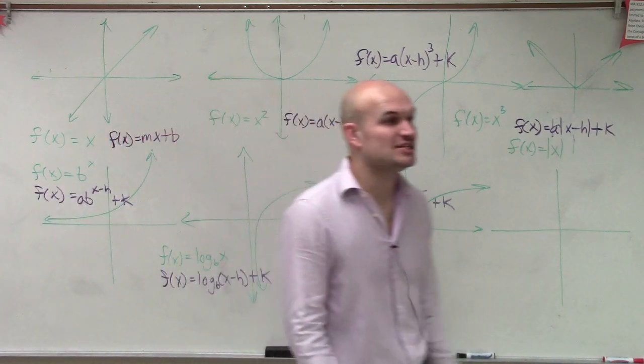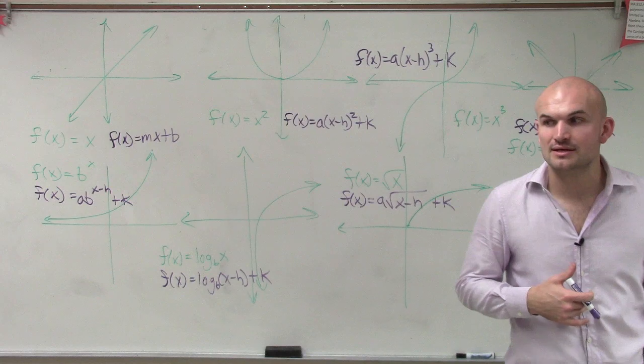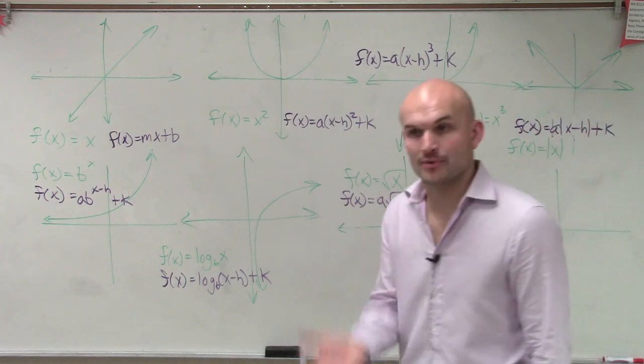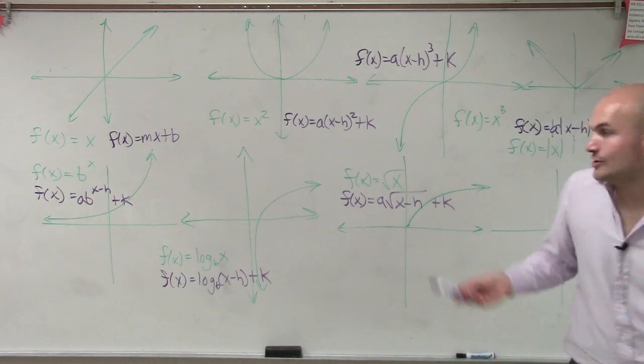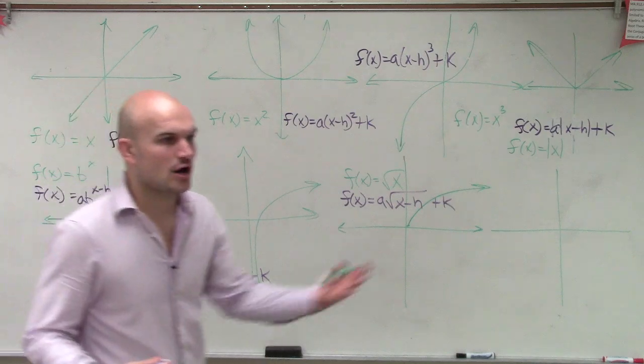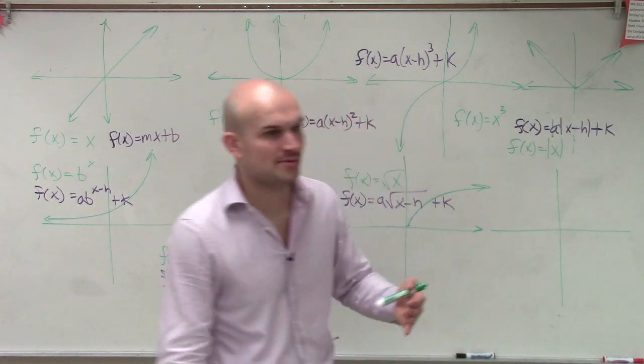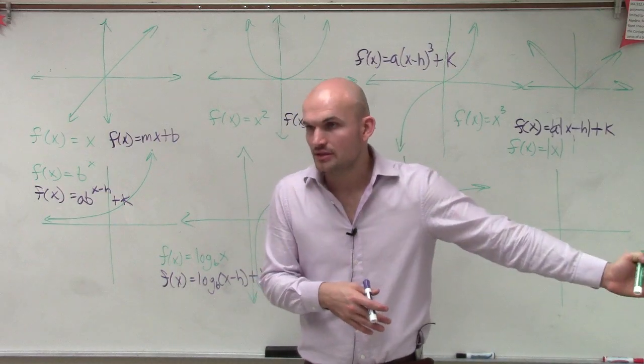Then we went and talked about the h and the k. Remember, h shifts your graph left or right, and k shifts your graph up or down. And notice, ladies and gentlemen, for each one of these formulas, it's always opposite of h. So you're always going in the opposite direction. Remember, it was always like x plus 2. That means you shifted 2 to the left.